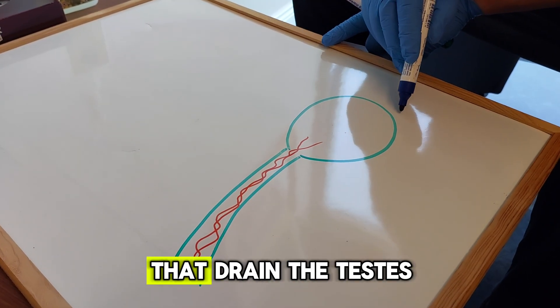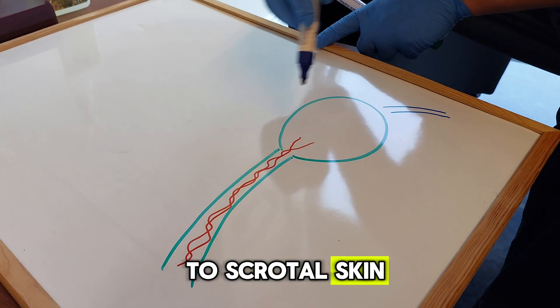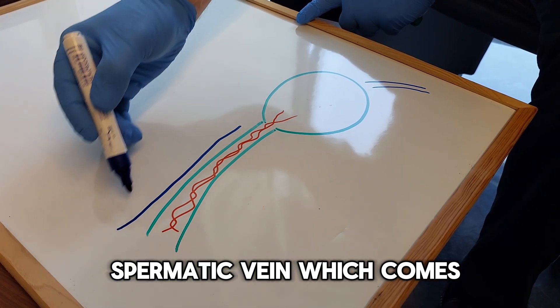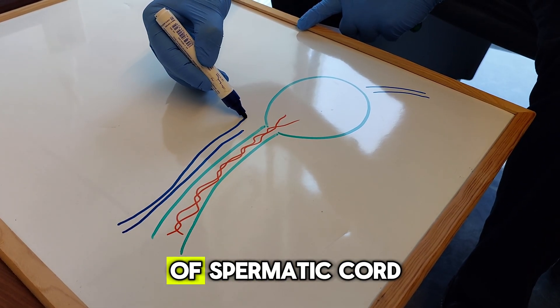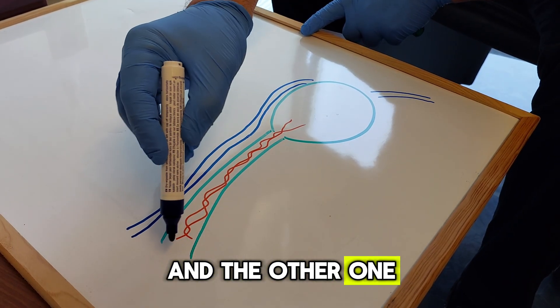One is gubernacular veins that drain the testis to scrotal skin. One is the external spermatic vein which comes here in the side of spermatic cord and enters the testis.